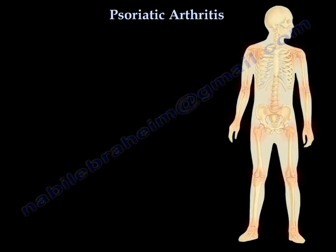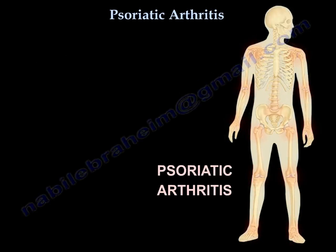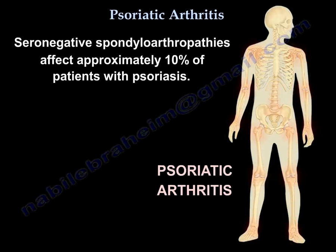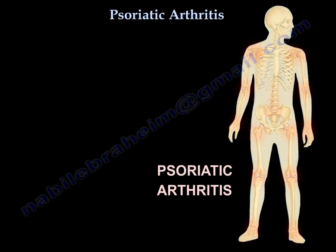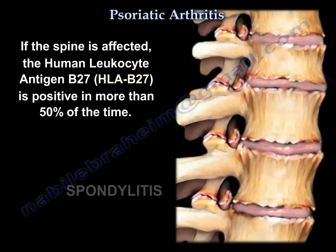Psoriatic arthritis is a very important topic for any orthopedic exam. It is a seronegative spondyloarthropathy that affects approximately 10% of patients with psoriasis. If the spine is affected, HLA-B27 is positive more than 50% of the time.